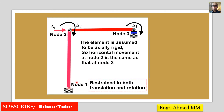Here, node 1 is the same as before — restrained in both translation and rotation. In node 2, there is translation and there is rotation. And in node 3, there is rotation. One important thing: here there is also translation, and here also translation. As they are in the same direction and on the same line, the horizontal movement at node 2 is the same as that at node 3.